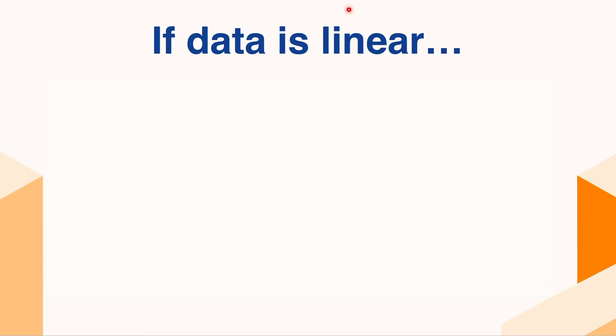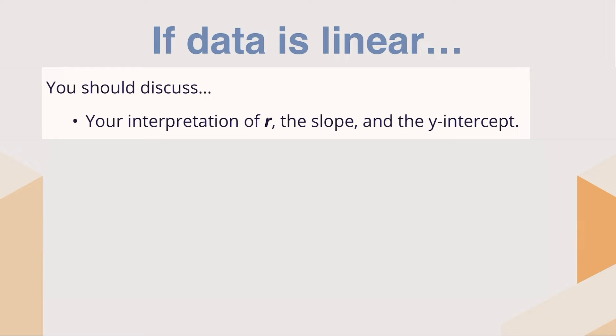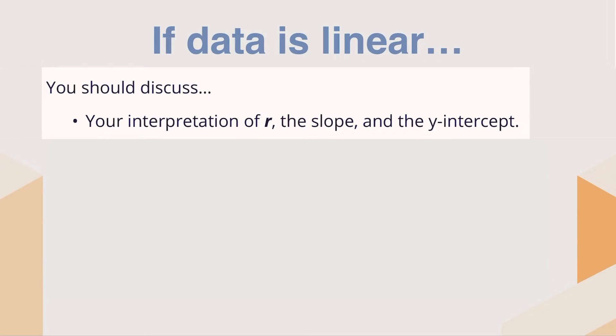Residuals aren't necessarily taught in the curriculum, but they're a great add-on to a statistical IA. If your data is linear, here are some things you should be discussing: your interpretation of R — the correlation coefficient — looking at direction, strength, and linearity. You're talking about the slope in context: as one data value goes up, the other goes up. You might even consider the y-intercept: what does it mean, where is your starting point, and where is your data going?